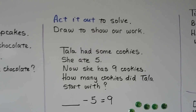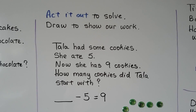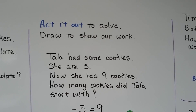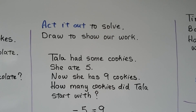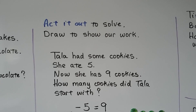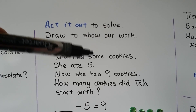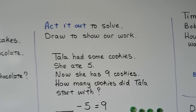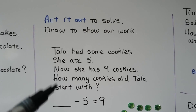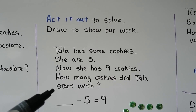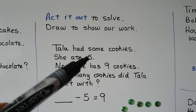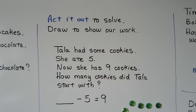We can act it out to solve and draw to show our work. Tala had some cookies. She ate 5. Now she has 9 cookies. How many cookies did Tala start with? It doesn't tell us — it just says she has some cookies. So what do we need to find? We need to find how many cookies she started with. What information do we need to use? She ate 5 of the cookies and now has 9 left over.